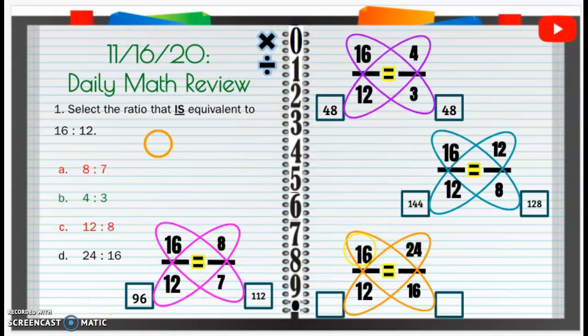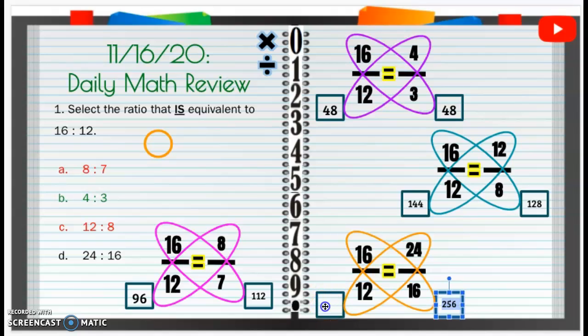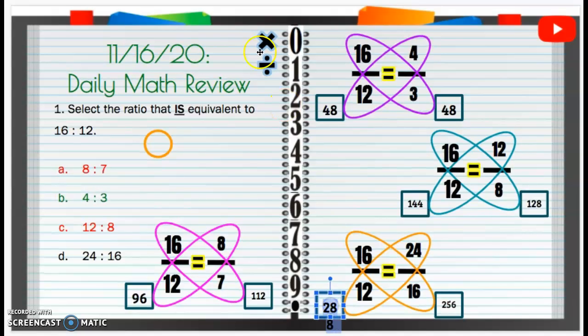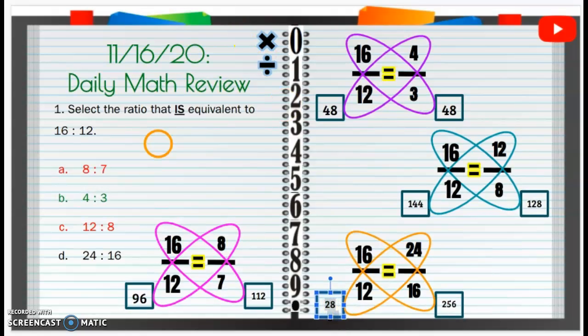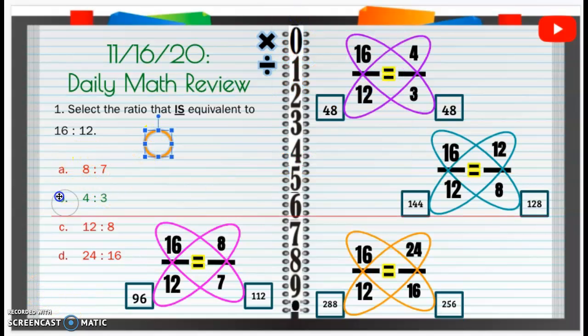All right, let's take a look at the last one. 16 times 16 is 256. And then 12 times 24 is going to be 288. So is 288 and 256 equal? Nope, it is not. So the only one that we are correct with that it is equal to is 4 to 3. So we are going to put our circle around B, 4 to 3. Great job!